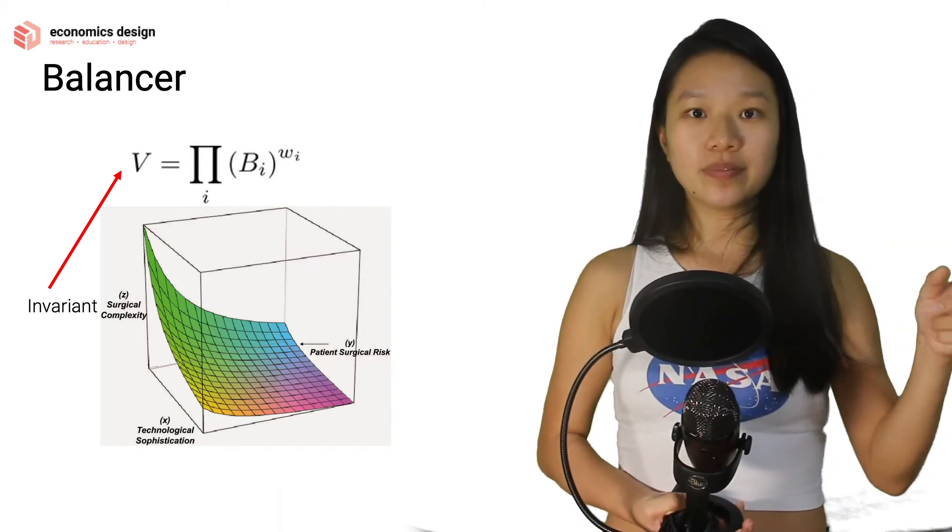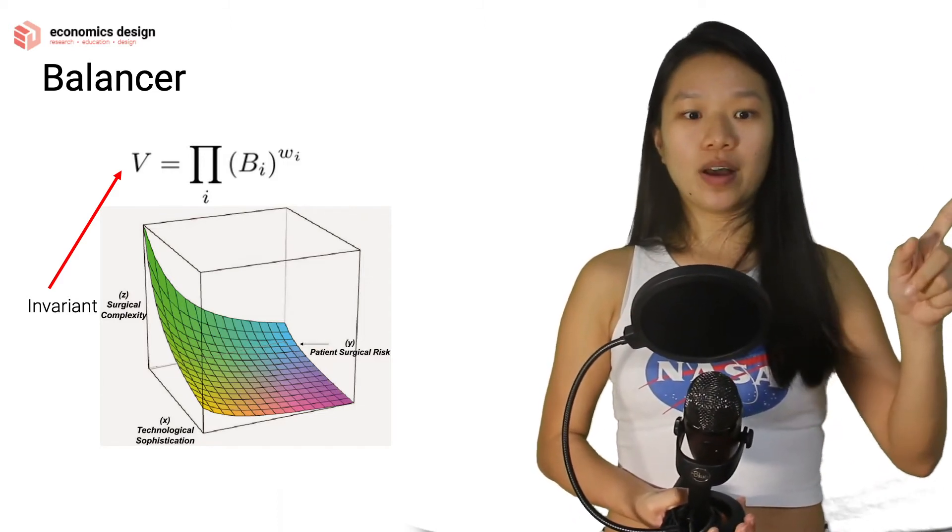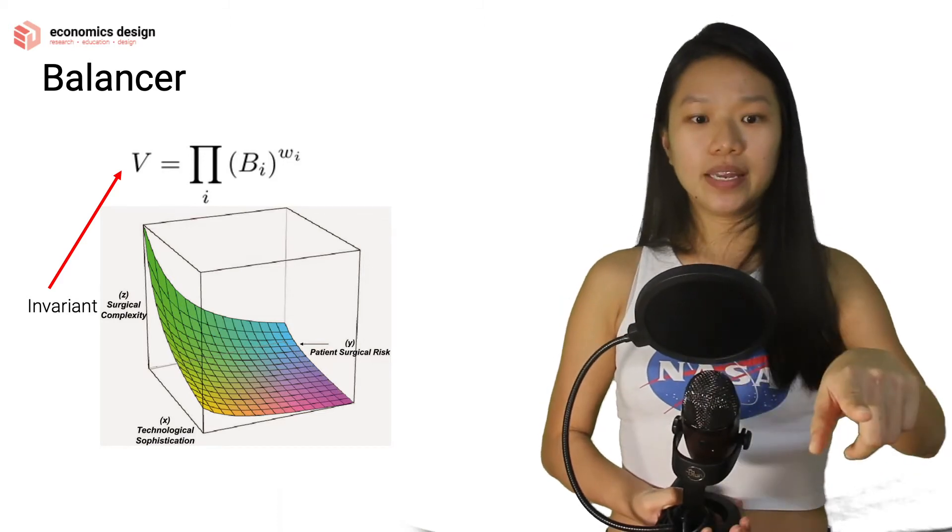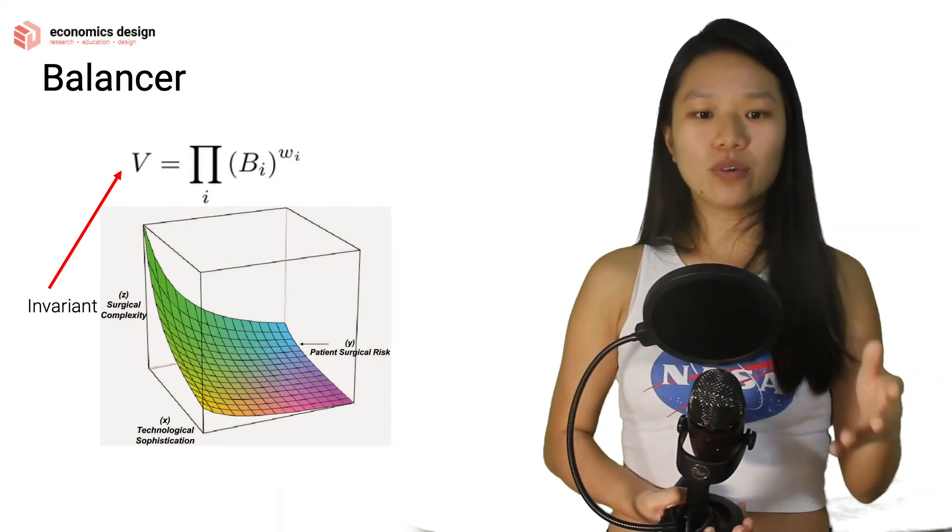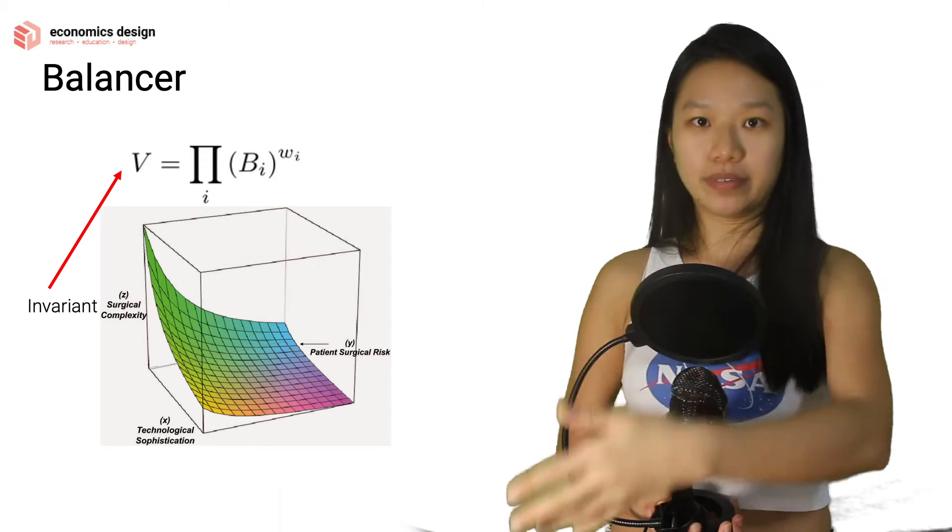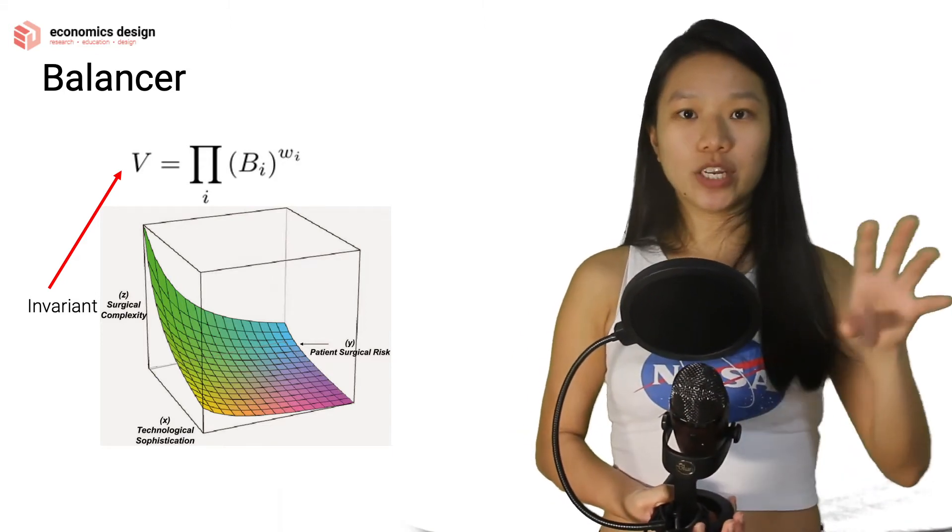In the previous Uniswap, you have K equals XY, right? In Balancer, you have V equals X times Y times Z. And you can change the weights of that.